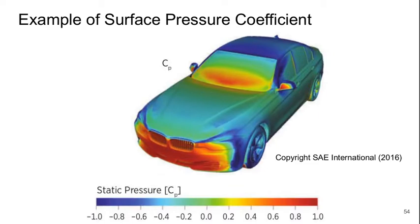Here's an example of something that you might do with post-processing. This is from the textbook and it shows the static pressure distribution all over the surface of a vehicle, normalized as a pressure coefficient. We can see the regions of high pressure where we'd expect them at stagnation points. The regions of low pressure correspond to the regions of highest velocity. The greenest regions correspond to the pressure that's roughly equal to atmospheric pressure.